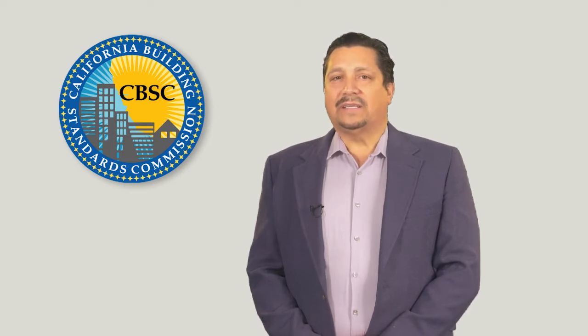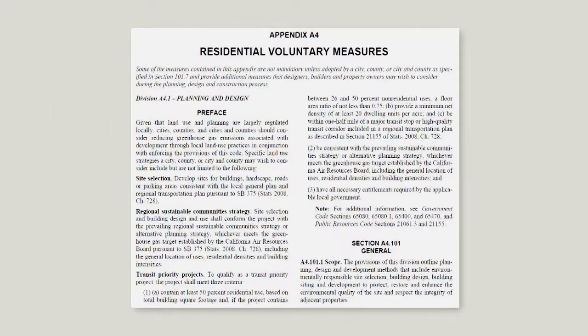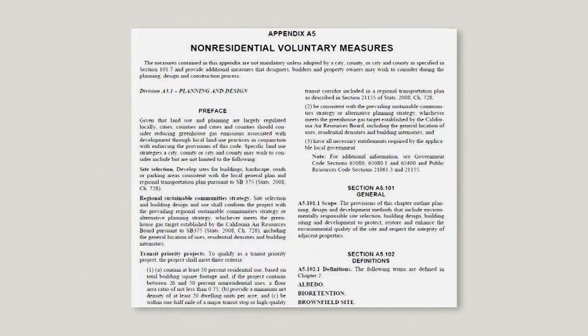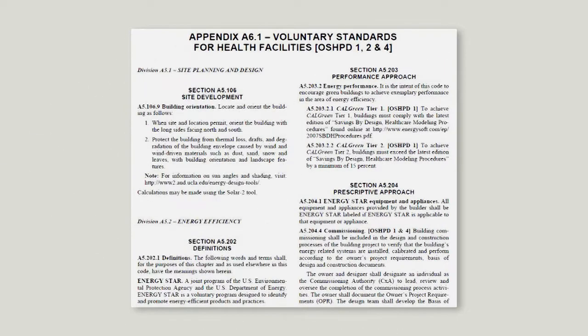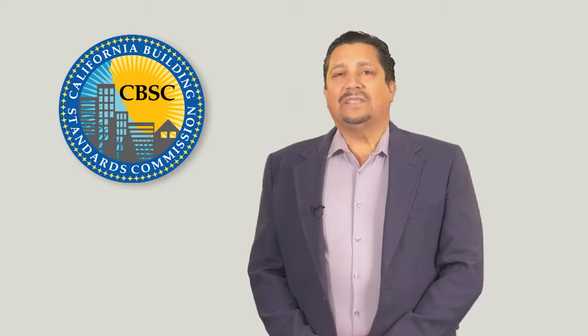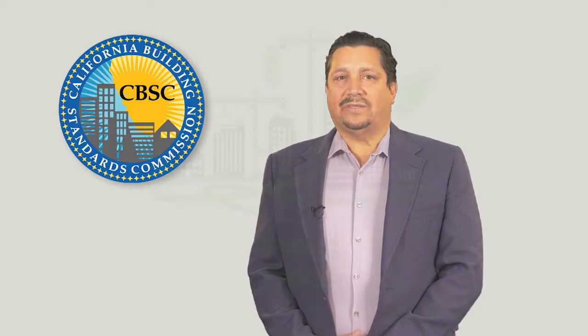In addition to the mandatory Green Building Standards in Chapters 4 and 5, voluntary options for more stringent standards are provided in Appendix Chapters. Appendix Chapter A4 has Voluntary Residential Green Standards and Appendix Chapter A5 has Voluntary Non-Residential Green Standards. Additionally, Appendix A6.1 contains Voluntary Standards for Health Facilities. These voluntary standards are referred to as Tiers.